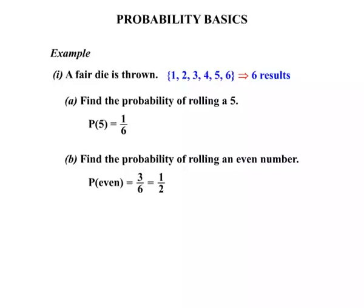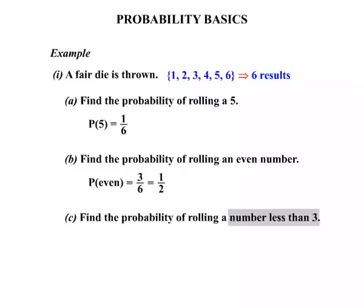Now we're asked to find the probability of rolling a number less than three. So a number less than three. Well there's three. But if we want the numbers less than three they are in fact one and two. So the chance or probability of rolling those would be two chances out of the six results. So the probability of the number being less than three. Two chances out of six. And again this fraction will break down. It will break down to one third.